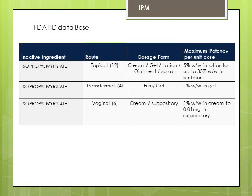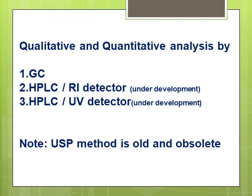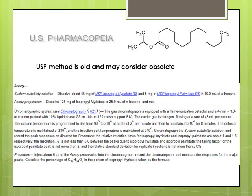In transdermal products, the allowable limit is 1% weight per weight in gel. In vaginal products, it is 1% for cream and 0.01 milligram per day for suppositories. For people doing reverse engineering, depending on the dosage form they are working on, they need to know these limits. For qualitative and quantitative analysis, I will talk about GC primarily, and also briefly mention HPLC with RI, UV, or ELSD for quantitation.